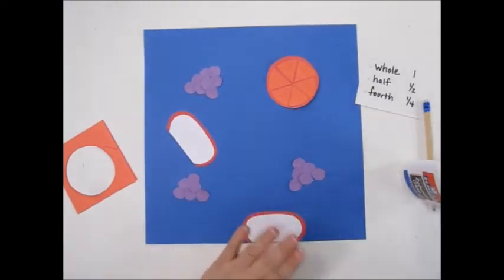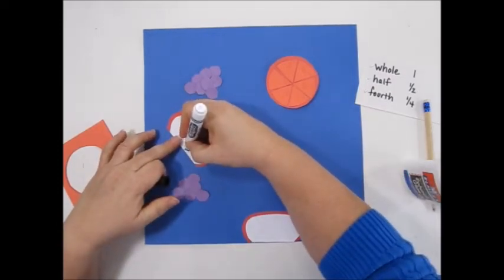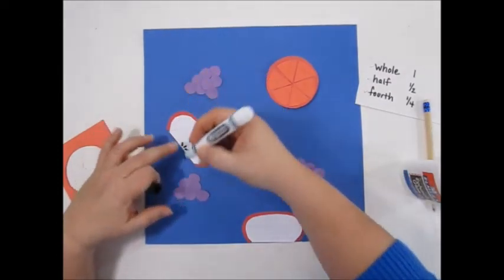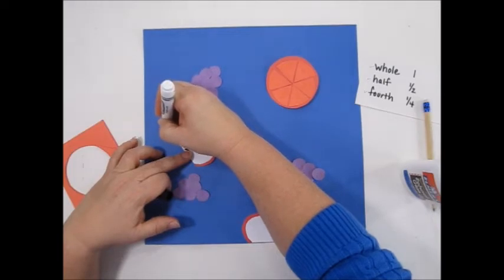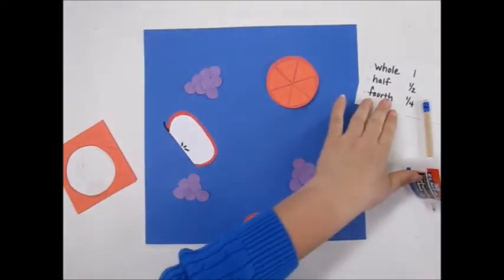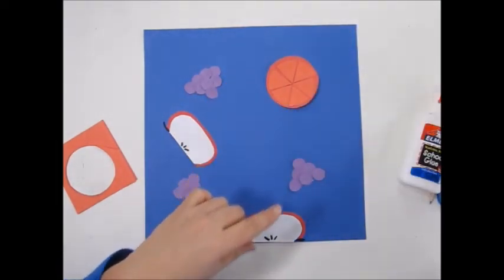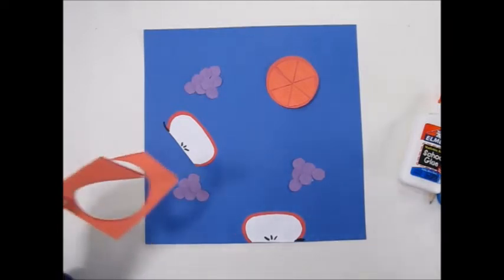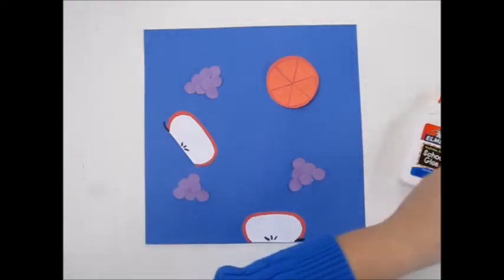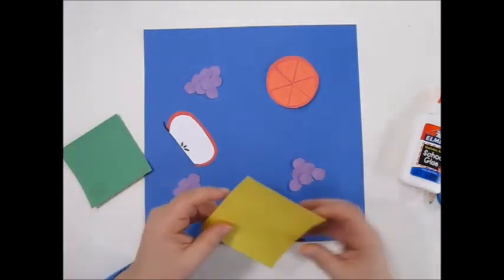I can use that black marker and add seeds. Now that I have everything I needed, a whole, a half, and a fourth, I can use the scraps of my construction paper to make other things. Maybe a banana would be fun.